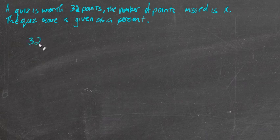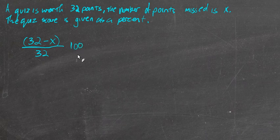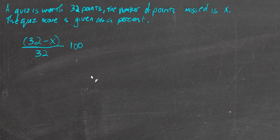We would take 32 and subtract the number wrong, that would be x. Then 32 minus x, 32 minus the number wrong would be the number correct. If you take the number correct and divide that by the total possible, 32, and then multiply that by 100, that gives us the percentage. That's an expression that represents the score of a given quiz.